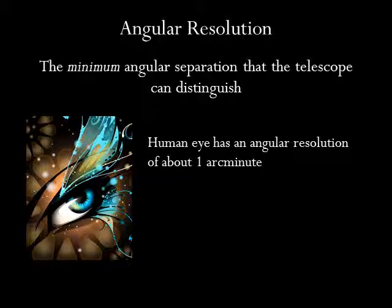Angular resolution is the smallest angle over which we can tell that two dots, or two stars, are distinct. The human eye has an angular resolution of about 1 arc minute. This means that two stars can appear distinct only if they are separated by at least 1 arc minute in the sky. If they are separated by less than 1 arc minute, our eyes will not be able to distinguish them individually and they will look like a single star.